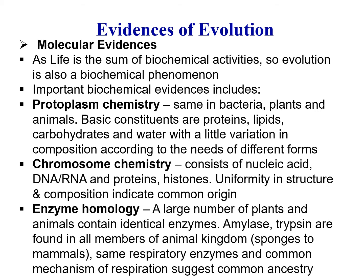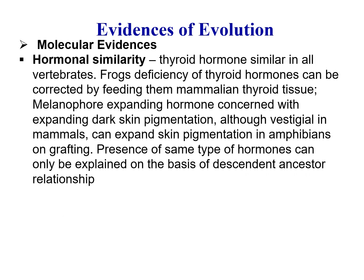Enzyme homology: a large number of plants and animals possess identical enzymes. For example, amylase and trypsins are found in members of the animal kingdom from sponges to mammals. The same respiratory enzymes and common mechanism of respiration suggest their common ancestry. Many respiratory and metabolic enzymes are the same and doing the same job in all types of organisms.